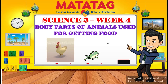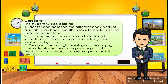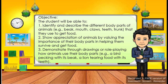Today, we will discuss body parts of the animals used for getting food. This is our objectives. The students will be able to identify and describe different body parts of the animals, for example, beak and mouth, the teeth and trunk that they use to get food. To show appreciation, animals start by doing the importance of their body parts in helping them to survive and get food.